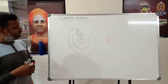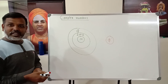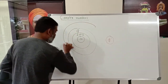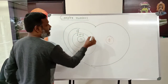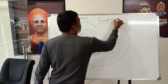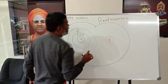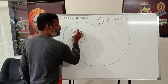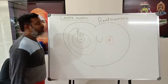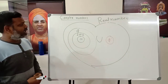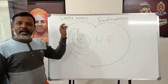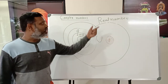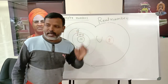The combination of both rationals and irrationals together we call the set of real numbers. The union of rational and irrational numbers — all these numbers together — is what we call real numbers.